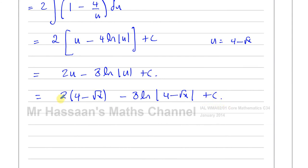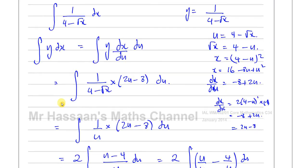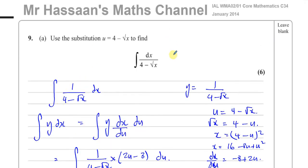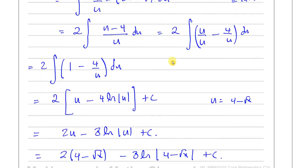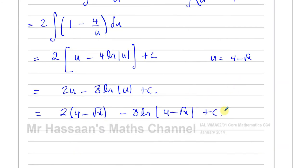So back-substituting with u = 4 minus root x, we get 2(4 minus root x) minus 8 ln|4 minus root x| plus c. You could write that as 8 minus 2 root x if you want — that's fine. Don't forget the plus c because it's an indefinite integral. That's the answer to part A.